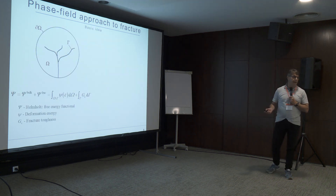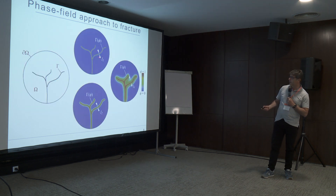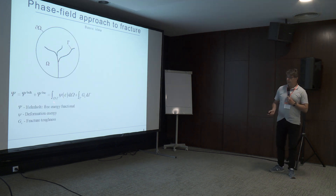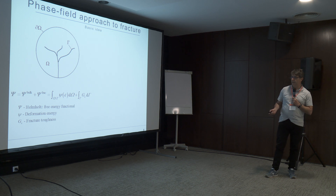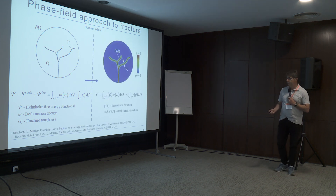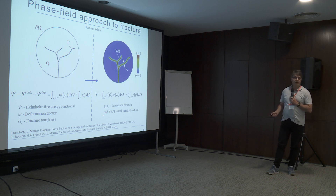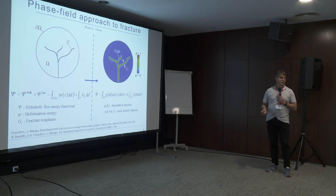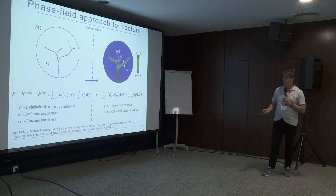Very important is the length scale parameter L — it is the thickness of the diffuse zone, and we should formulate this parameter before we start the modeling. We have the free energy functional, which consists of deformation energy and fracture toughness. In the deformation energy we have the degradation function J, and also the gamma, which is the crack density function. This was published 24 years ago by Francfort, Marigo, and Bourdin, who established this model for the fracture process.